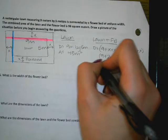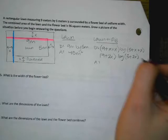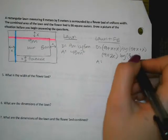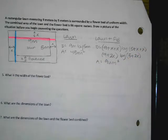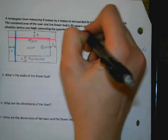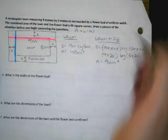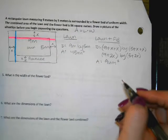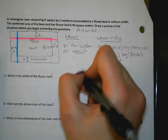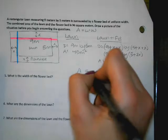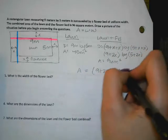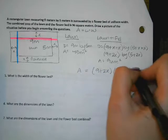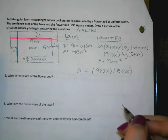And then in the problem, they actually told us what the area was. Does anyone know what the area is? 96 meters squared. Okay. And we're all pretty familiar with the formula area equals length times width, right? Area equals length times width. So I'm going to go ahead and say the area equals nine plus two x times five plus two x. Are you okay with that?